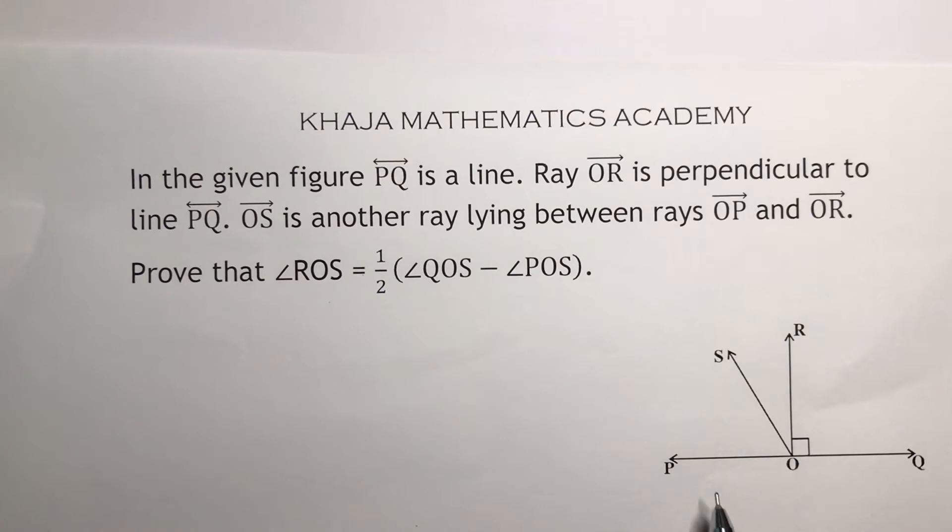In the given figure, PQ is a line, OR is perpendicular to PQ, OS is another ray lying between OP and OR. We need to prove ROS equals half of angle QOS minus POS.